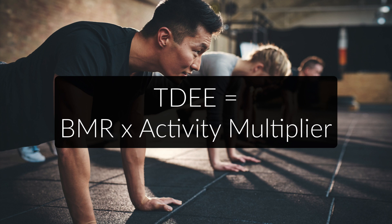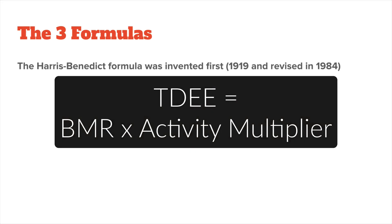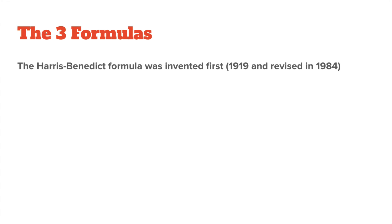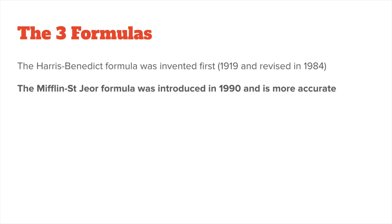Because the BMR makes up so much of our daily energy expenditure, all the TDEE formulas start by calculating BMR first, and then they multiply this value with a factor between 1.2 to 1.9, depending on your activity level. The Harris-Benedict formula was one of the earliest equations for this, having been invented in 1919. It was revised in 1984 to be more accurate, and was used up until 1990, when the Mifflin-Sandor formula was introduced.